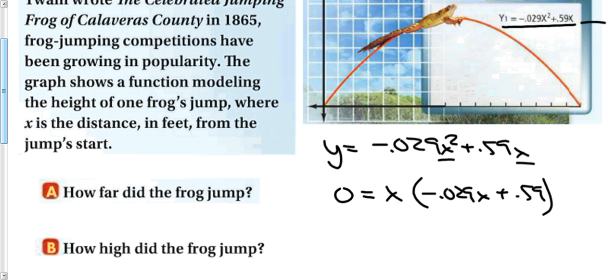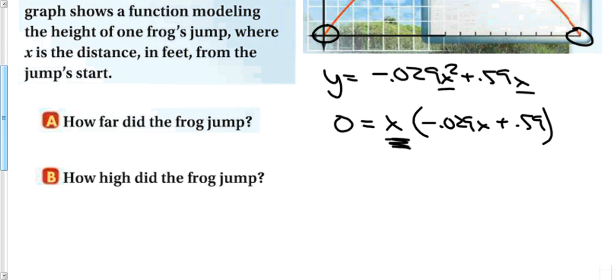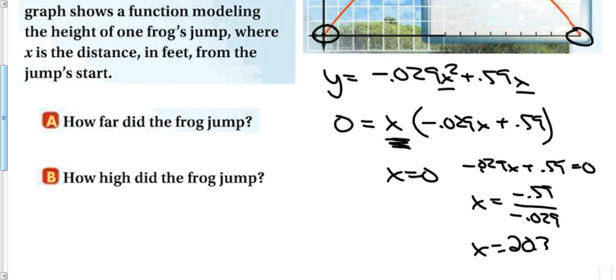Then I can set this equal to 0 to figure out the two most important points, the x-intercepts. So now I have my first term there. So set that equal to 0, so x equals 0. And that's what that point right there says, is that this frog is going to start jumping at 0, 0. My other term is going to be negative 0.029x plus 0.59 equals 0. So x is going to equal negative 0.59 divided by 0.029. Plugging that into a calculator gives me x equals 20.34. How about that?